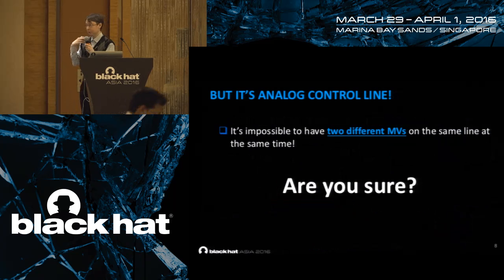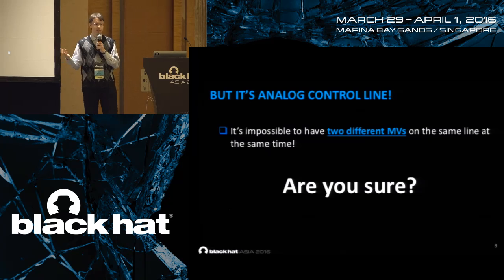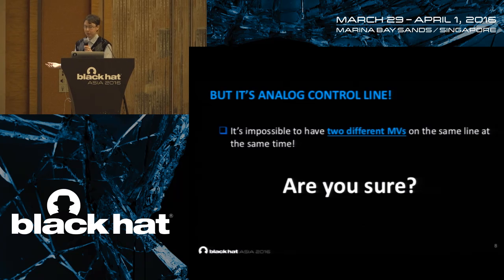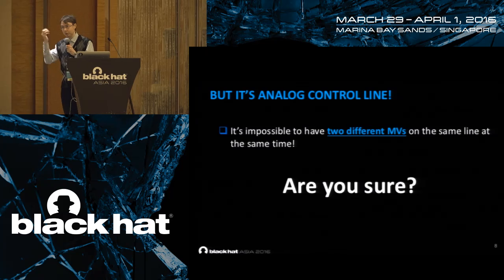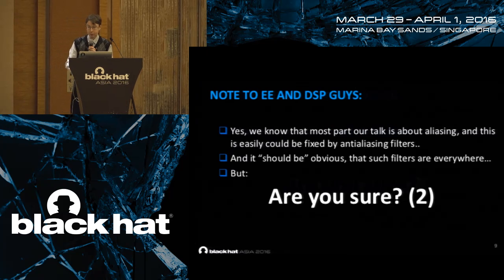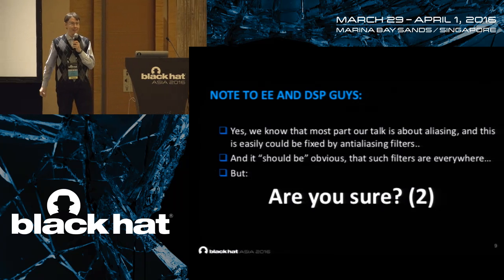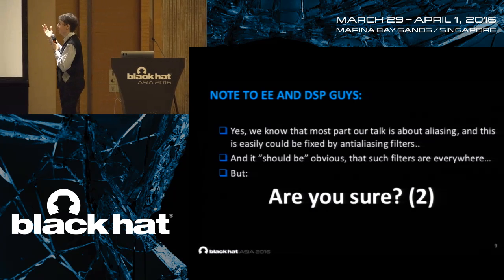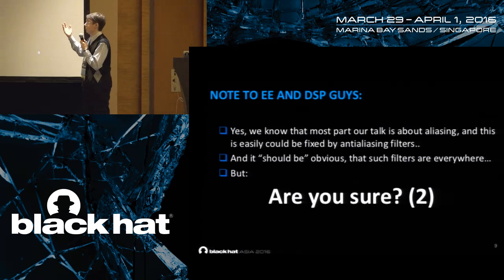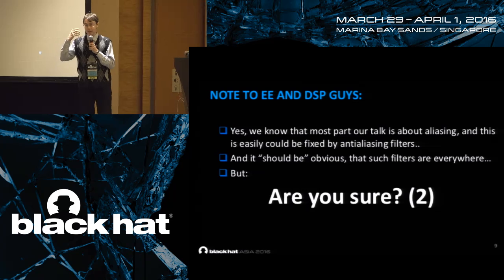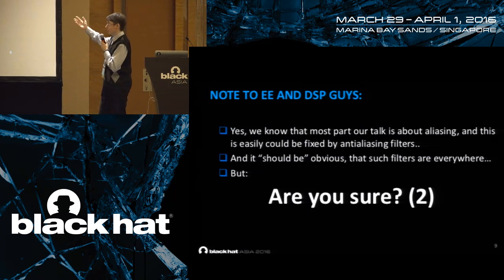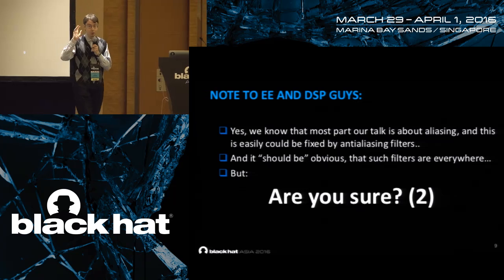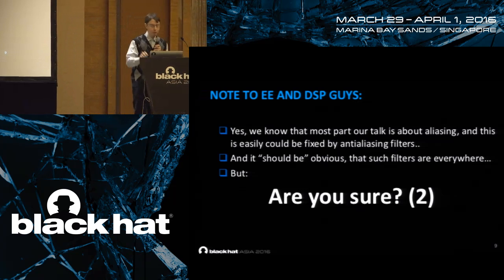You can tell me — if you are not an electrical engineer or DSP specialist — this is an analog line. It's impossible to have two different manipulated variable values at the same time. But are you sure? If you are a DSP person, you can tell me: we know that it's all about aliasing, and this is easy — it could be fixed by anti-aliasing filters. Every ICS engineer told me of course such filters are everywhere and they work correctly. But are you sure? Are you really sure? Let me show you a demo.